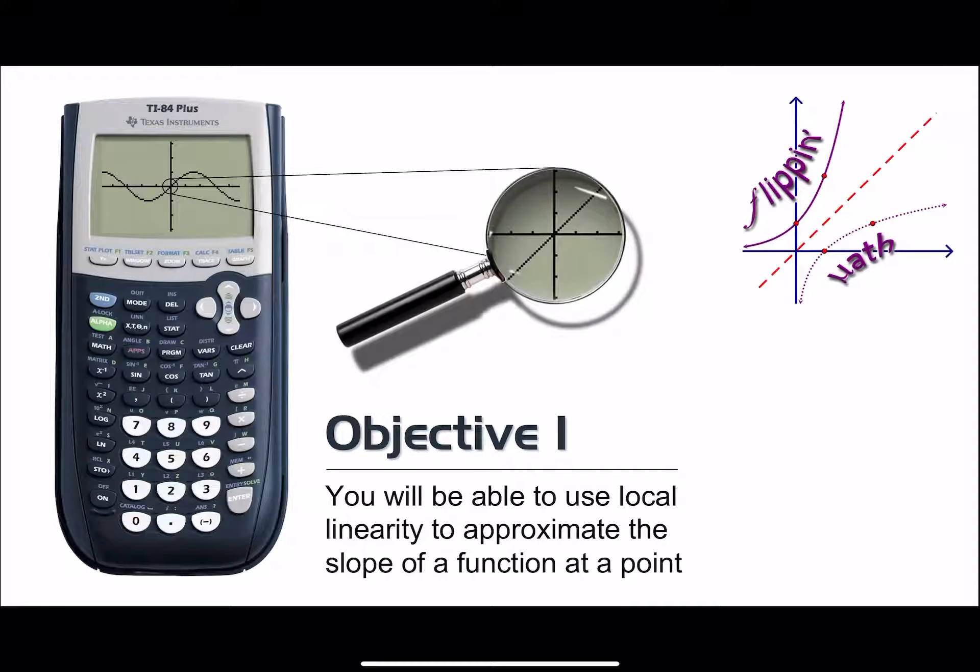First objective: you will be able to use local linearity to approximate the slope of a function at a point. And now that terminology there, local linearity, we haven't formally defined it just yet, but perhaps it's self-evident. Or if it's not, maybe the picture itself can help you figure out what it means.